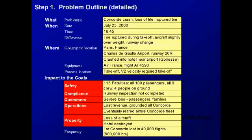This is a more detailed problem outline of the Concorde crash. You can see that there was some additional information added on the differences during the incident, the process location, and specific equipment. In addition to the safety and property goal, there were also impacts to the compliance, customer service, and operations goals.